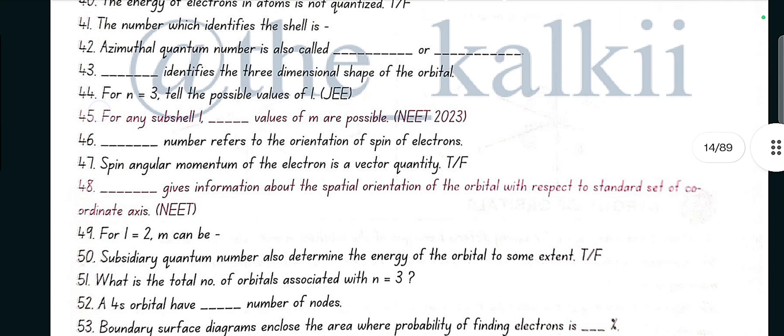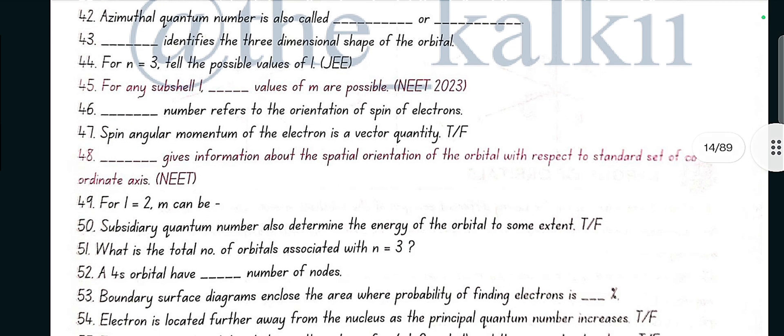For n equal to 3, the possible values of l are 0, 1, or 2. For any subshell l, 2l plus 1 values of m are possible. Spin quantum number refers to the orientation of spin of electrons. Spin angular momentum of the electron is a vector quantity, yes true. Magnetic orbital quantum number gives information about the spatial orientation of the orbital with respect to standard set of coordinate axes.